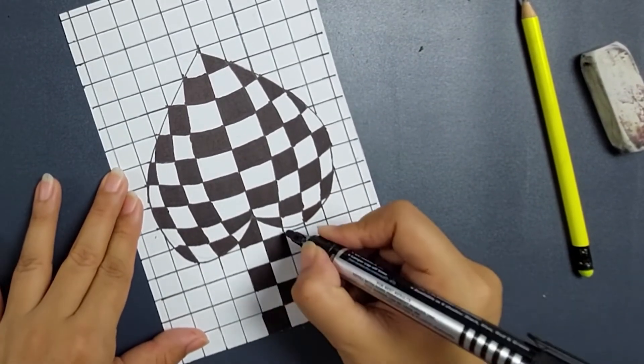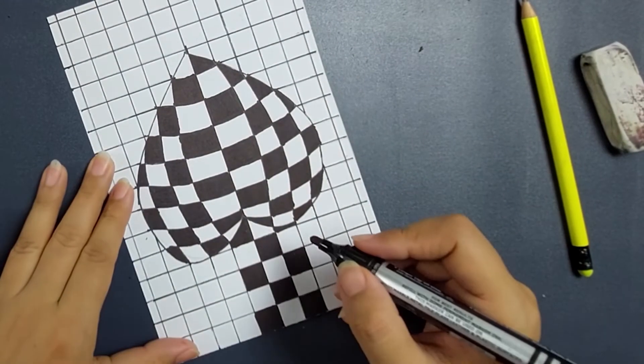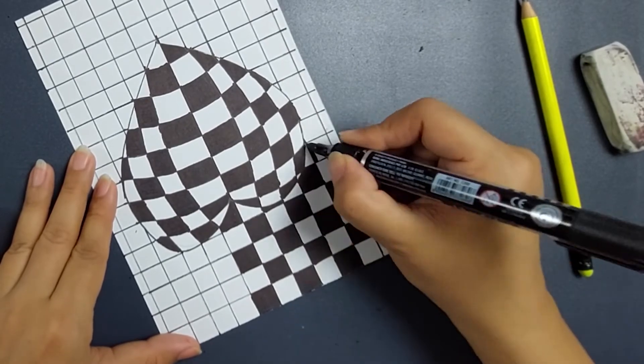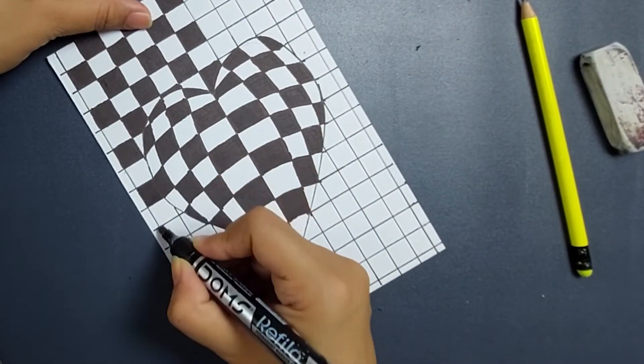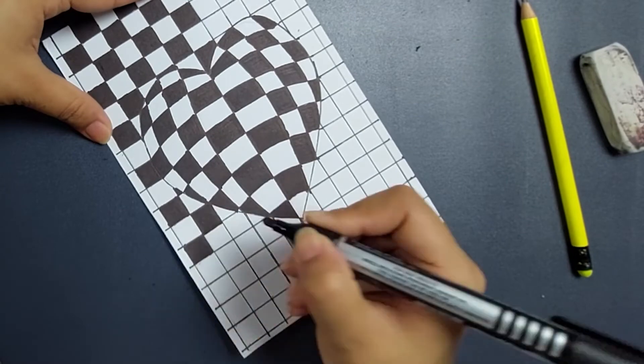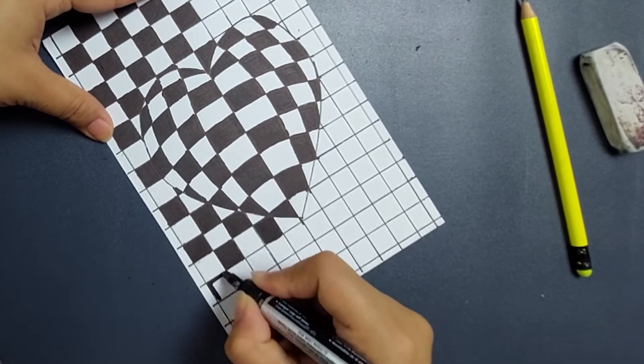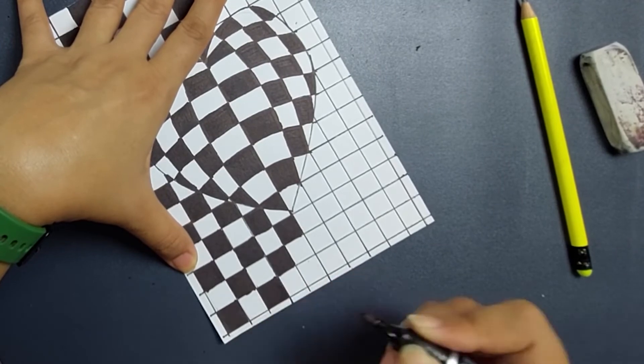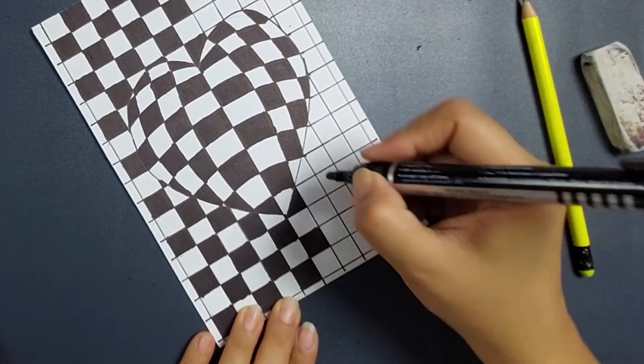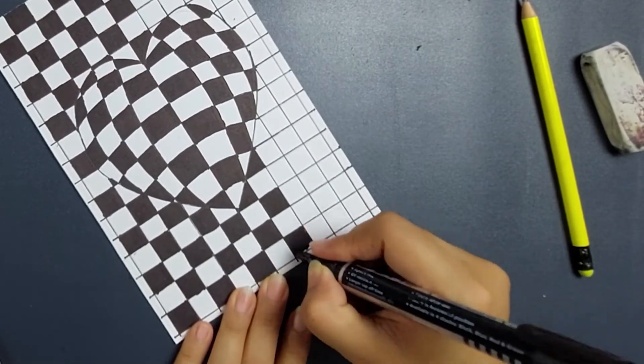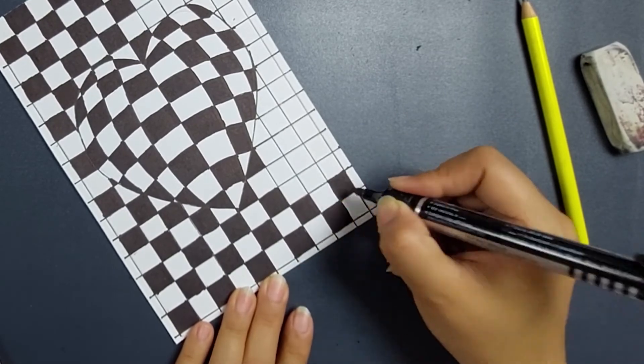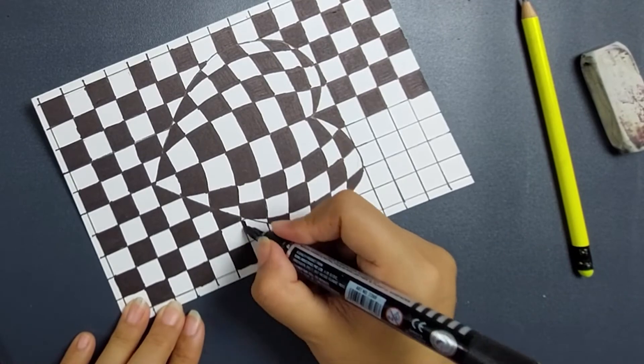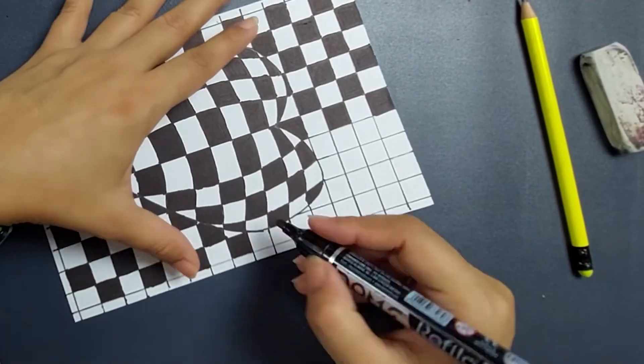This is something which we have to keep in mind. I am starting from one end. Now this is white, that means this has to be black. We cannot change it in between, otherwise we will spoil the whole thing. So whatever you are doing, just do it. Start from one corner and then do it, that is very important.